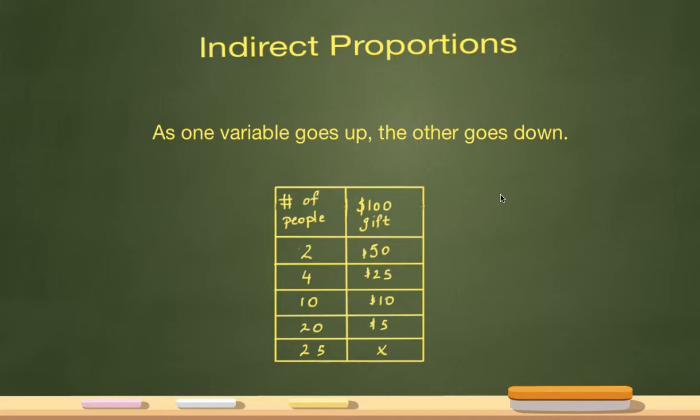The formula that we have for indirect proportion is going to make it easy for you on the SAT. For any kind of indirect proportion problem that you have, it will be x1 times y1 equals x2 times y2.